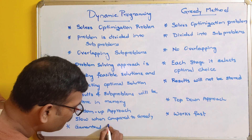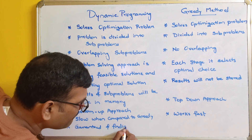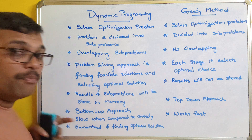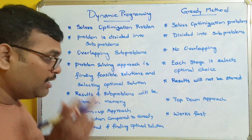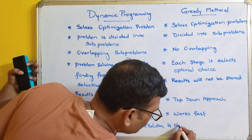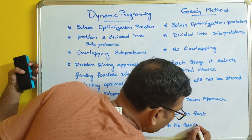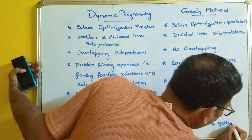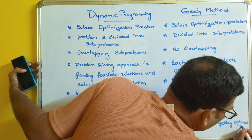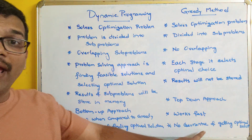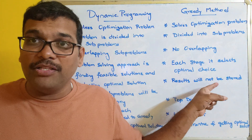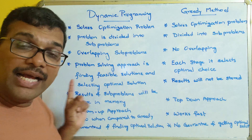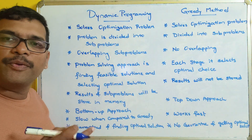The next very important difference is the guarantee of finding an optimal solution. If you use the dynamic programming approach, it is guaranteed that you will get the optimal solution. In the greedy method, there is no guarantee of getting the optimal solution, because at each stage we are only selecting the locally optimal choice.